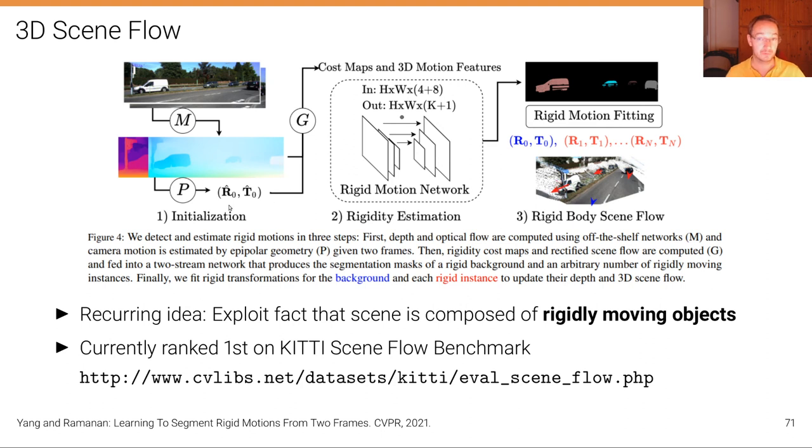as we've already discussed here in this lecture and lecture number seven for visual odometry. Then rigidity cost maps and rectified scene flow are computed and fed into a two stream network that produces segmentation masks.